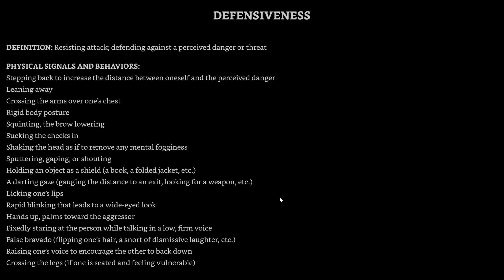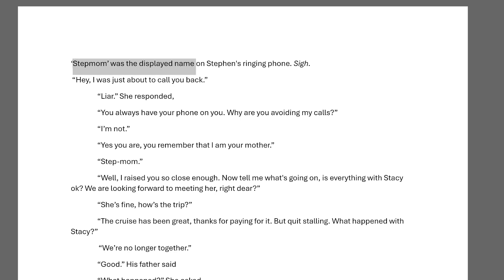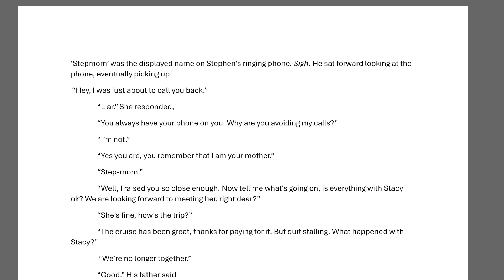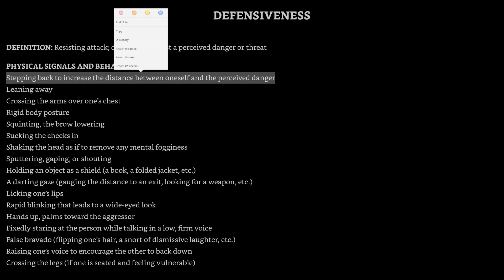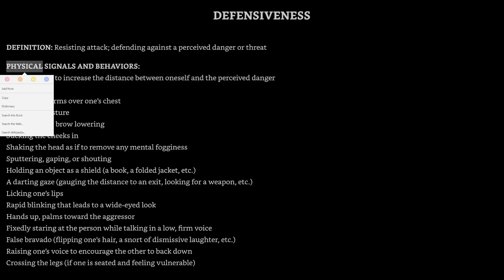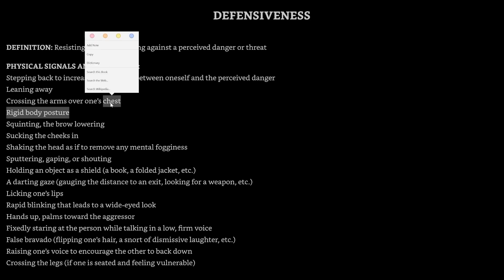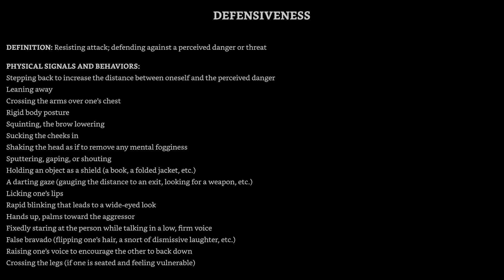All right, defensiveness — resisting attack, defending against perceived danger or threat. Physical signals include stepping back to increase distance between oneself and perceived danger. What we could do is: displayed on Steven's phone, he sat forward looking at the phone, eventually picking it up. So we've set up where we can use the stepping-back behavior. These are physical signals and behaviors — sometimes subconscious, like licking one's lips — ways that our body reacts naturally to a perceived defensiveness.